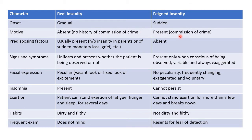Predisposing factors like family history of insanity, sudden monetary loss, grief, etc. will be present in case of real insanity, whereas they will be absent in faint insanity.